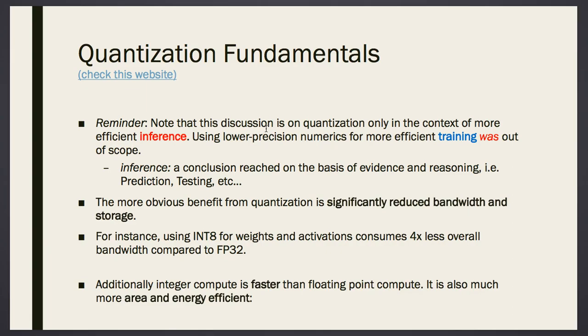In the previous example, we covered quantization in inference. That's why we call it inference quantization. But we could discover quantization for more efficient training, which was out of scope. We're going to start to discuss it starting with this week. Inference is a conclusion reached on the basis of evidence. The basis of evidence in our context is the pre-trained weights.